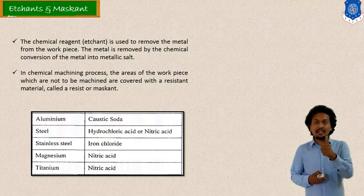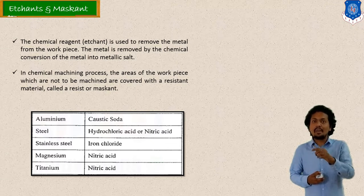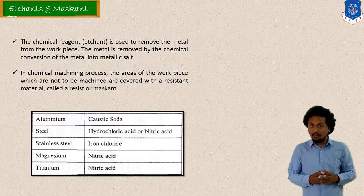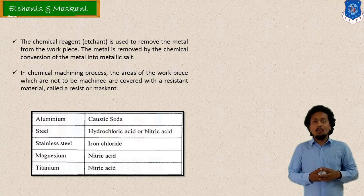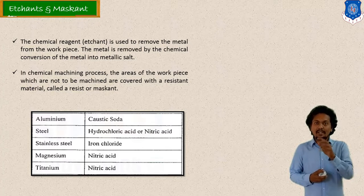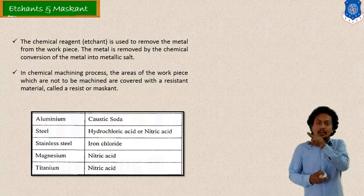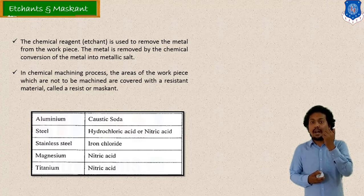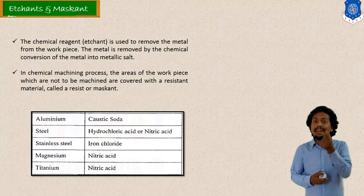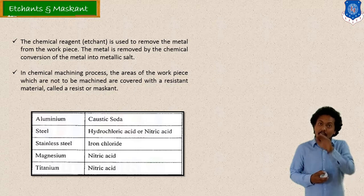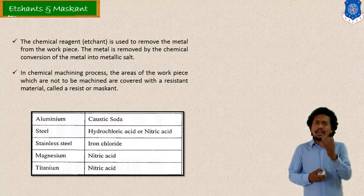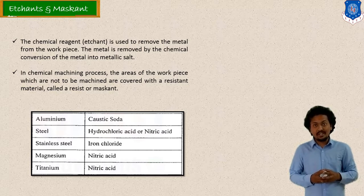To summarize: etchant is the chemical solution into which we immerse the workpiece for material removal. Maskant is the material applied to areas of the workpiece from which we do not want to remove material. Where maskant is applied, the reagent or etchant will not be in direct contact with that area, so material will not be removed. I have also mentioned different etchant or chemical solutions suitable for different types of workpiece materials.